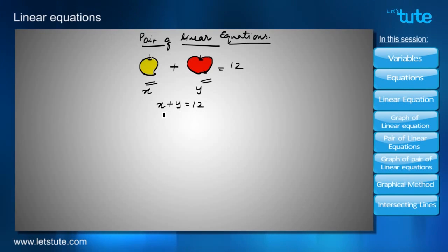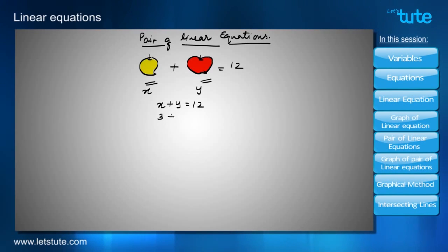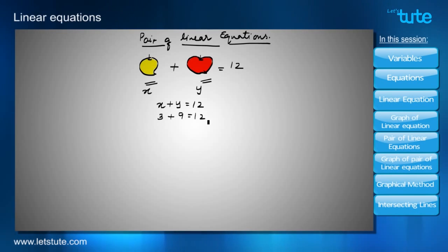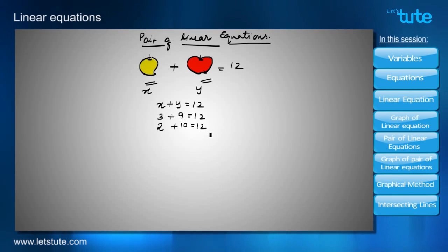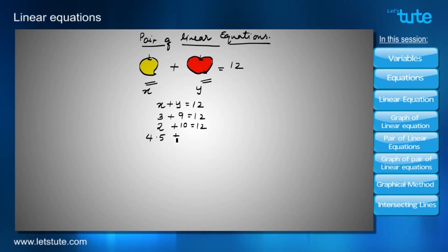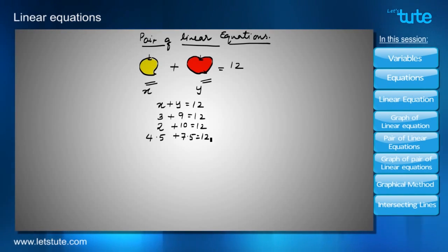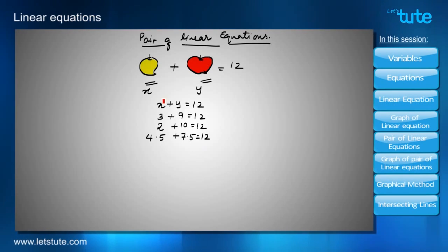Since I don't know the individual prices, I can assume many values for X and Y that give a total of 12. For example, if mango is 3 rupees then apple is 9 rupees; if mango is 2 rupees then apple is 10 rupees; if mango is 4.5 rupees then apple is 7.5 rupees. I can go on checking different values.